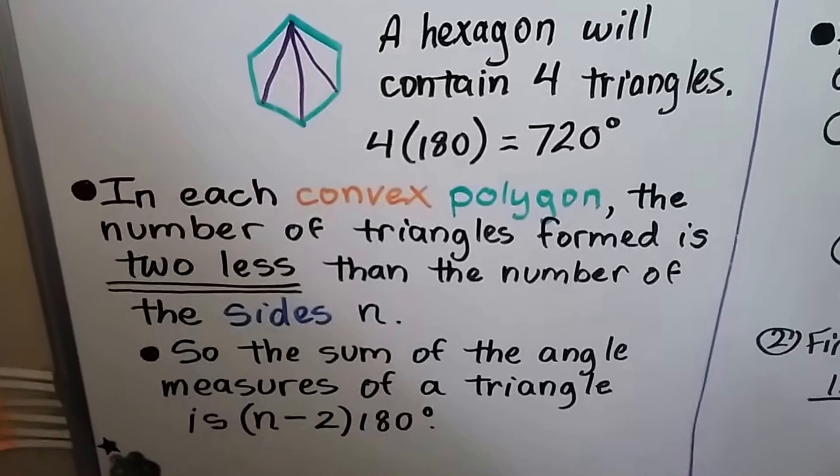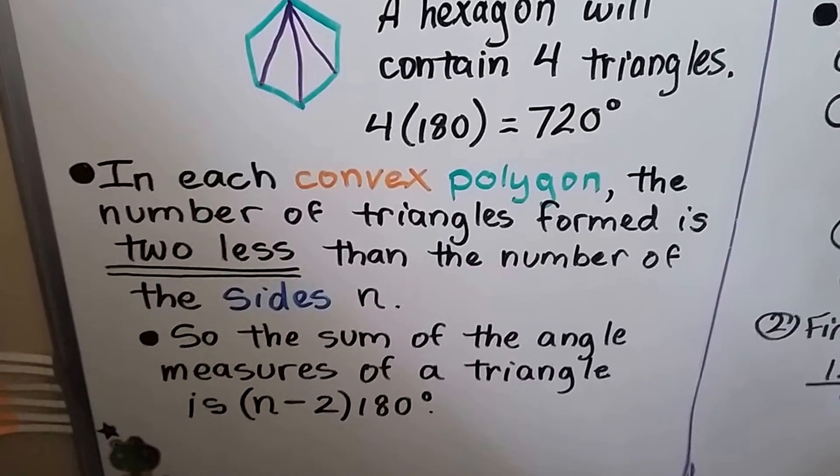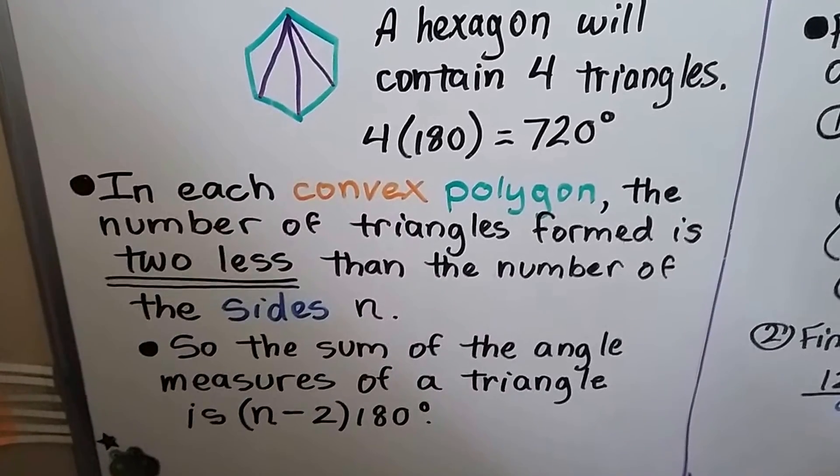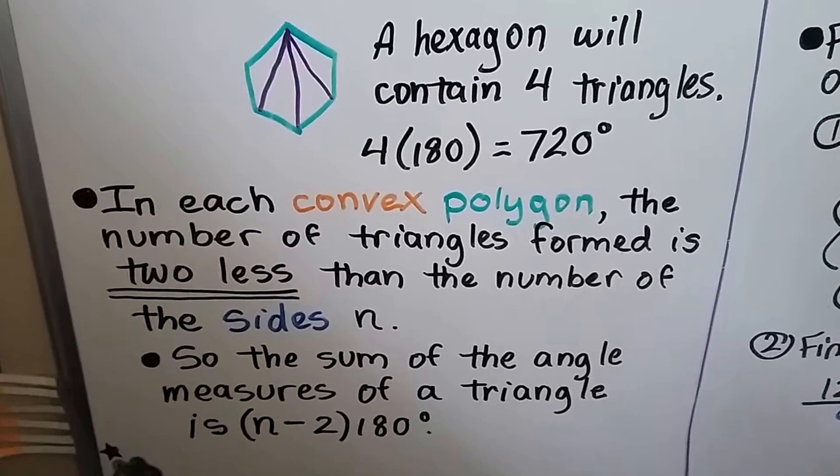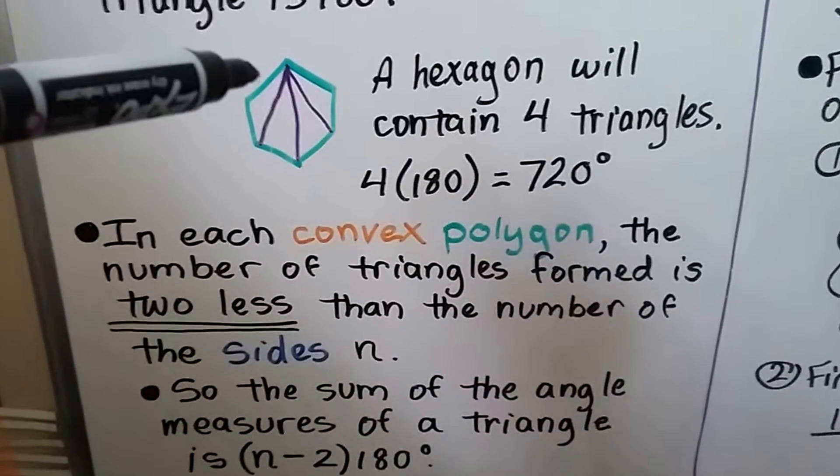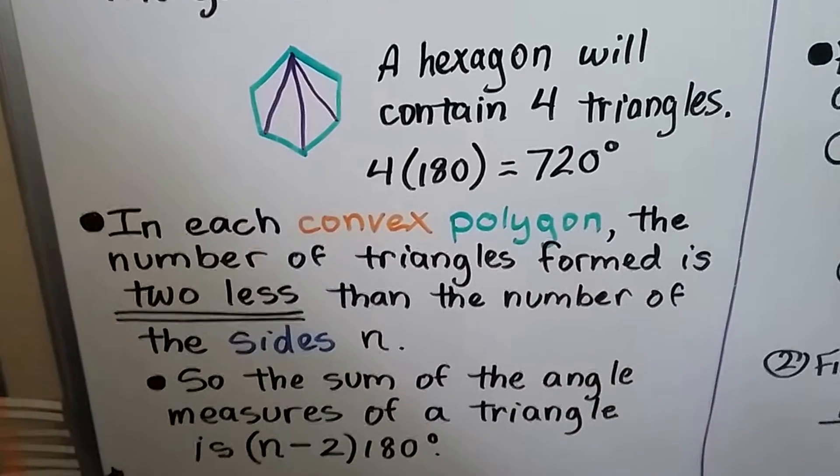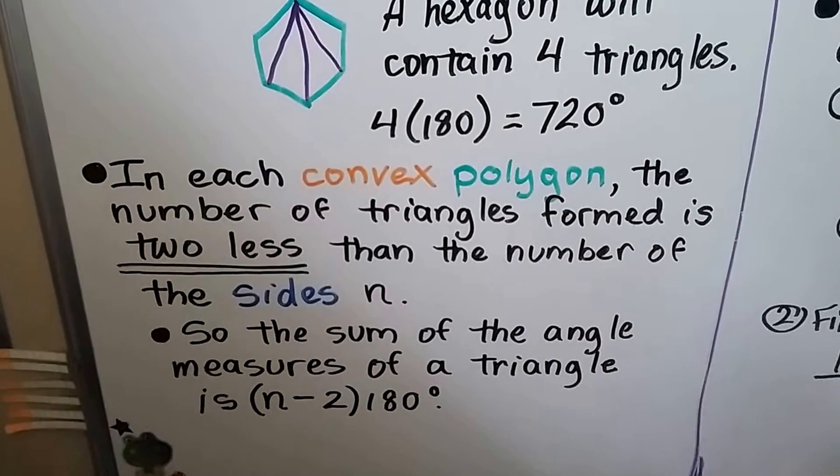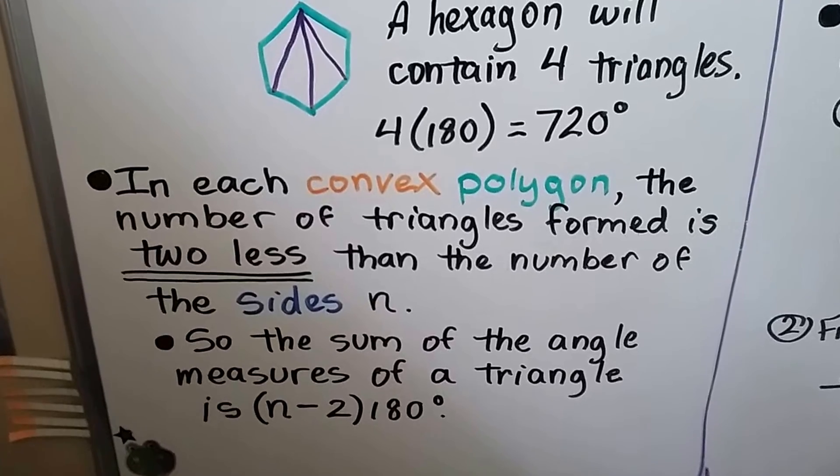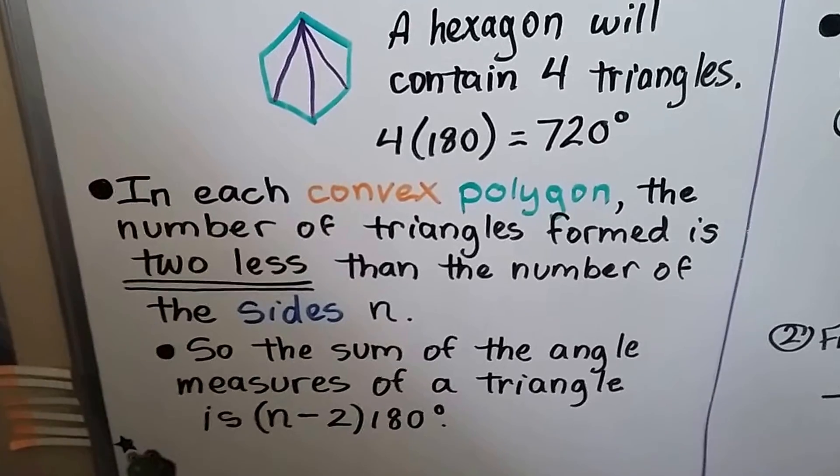In each convex polygon the number of triangles formed is two less than the number of the sides n. So a hexagon has six sides and made four triangles, two less than six. So the sum of the angle measures of a triangle is (n-2) times 180 degrees.